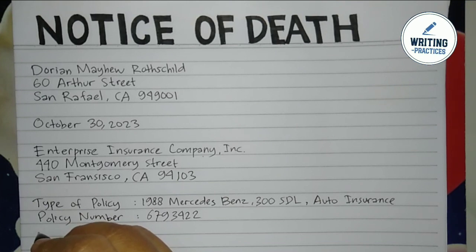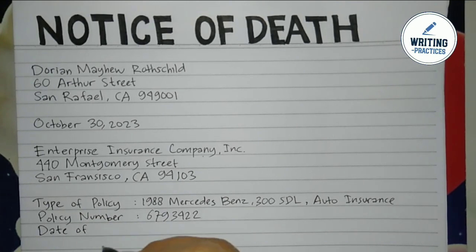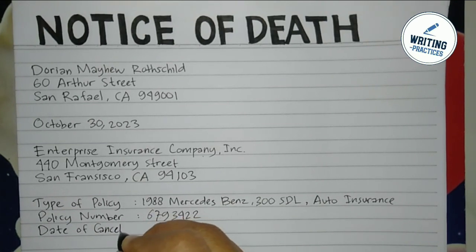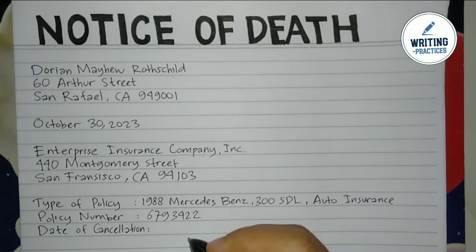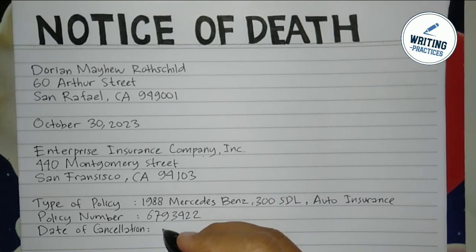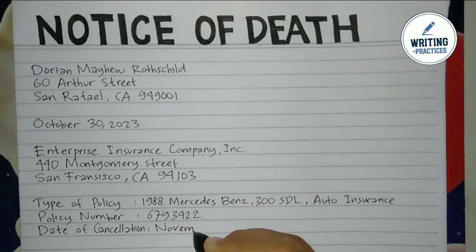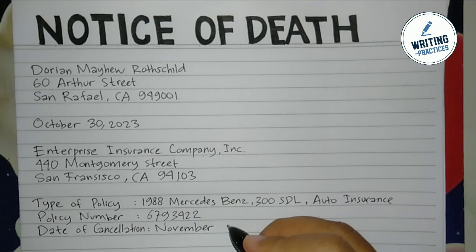Write the date of cancellation for the auto insurance. You must write the month, date, and year clearly. Make sure you complete all of this information and type everything correctly.